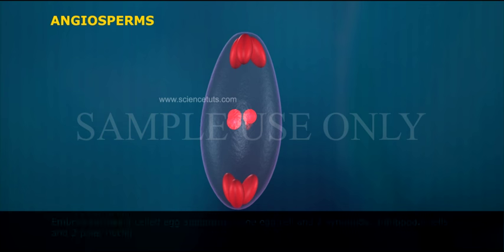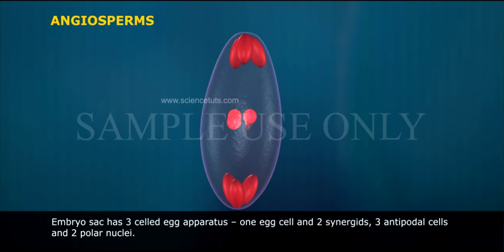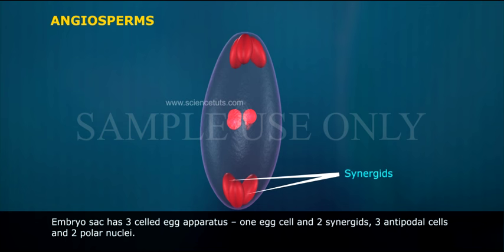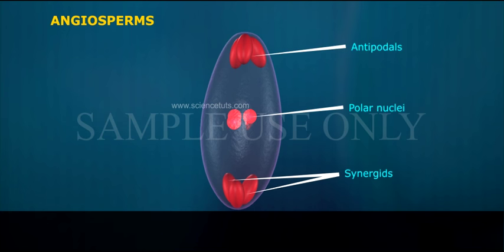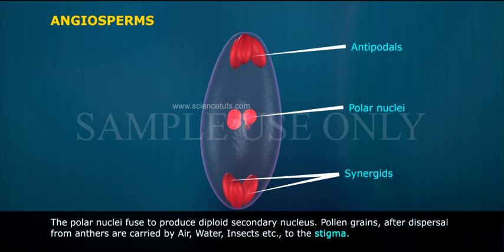The haploid embryo sac has three-celled egg apparatus: one egg cell and two synergids, three antipodal cells, and two polar nuclei. The polar nuclei fuse to produce the diploid secondary nucleus.